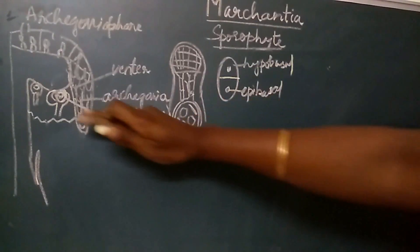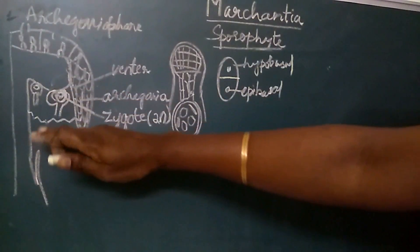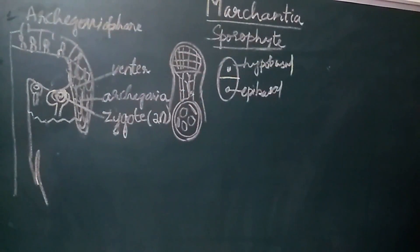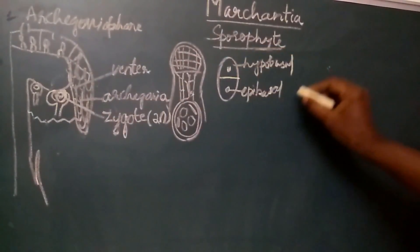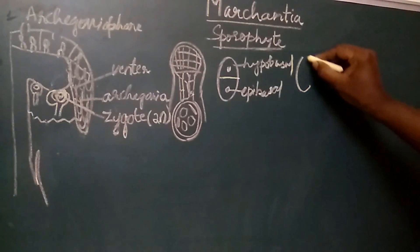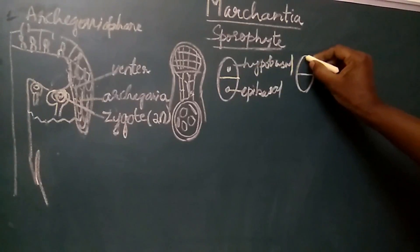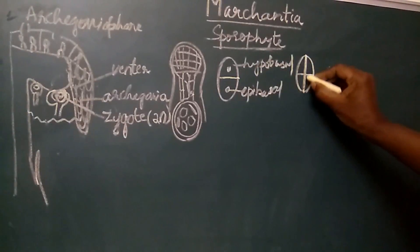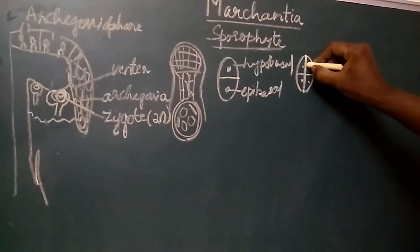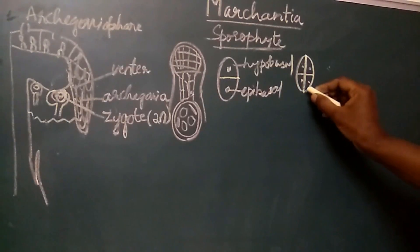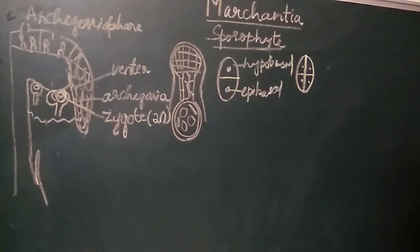This becomes the upper cell because the archegonia is in the inverted position — this is the upper part and that is the lower part of the archegonia. Another division occurs at right angles to the first division; that is, the second division is a vertical division. This results in the formation of four cells: two cells are hyperbasal cells and two are epibasal cells. This four-cell stage is called the quadrant stage.